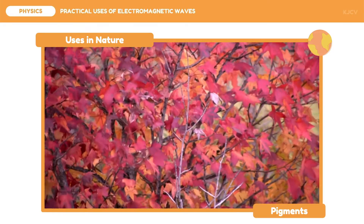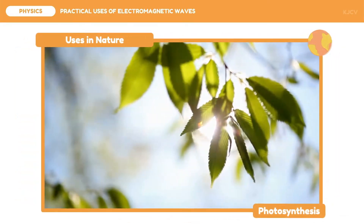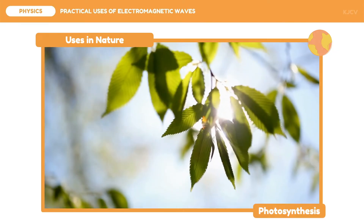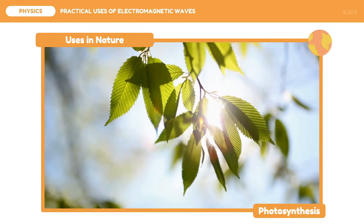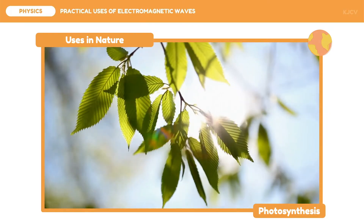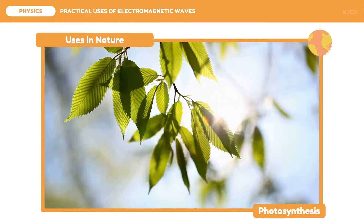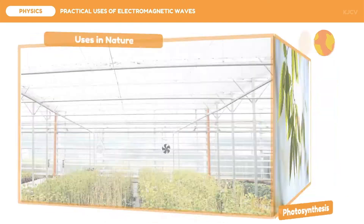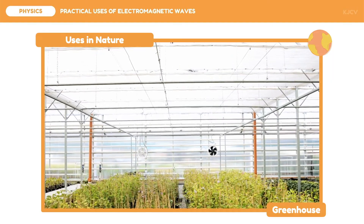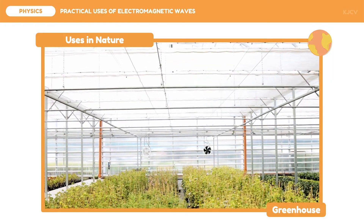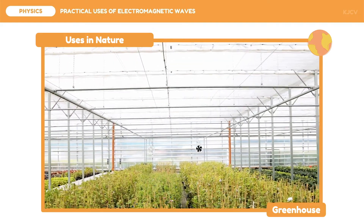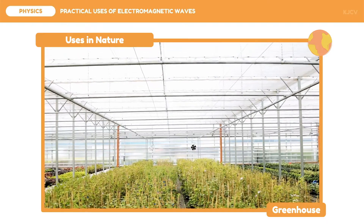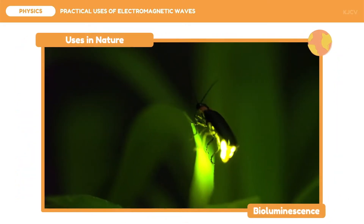The green pigment in plants enables them to photosynthesize. Photosynthesis is the process in which plants transform visible light into glucose and oxygen, and this is also applicable to autotrophic organisms. For plants that require regulated climatic conditions, a greenhouse is used — made up of glass walls and glass roofs which regulate the amount of visible light and other climatic conditions depending on the location.